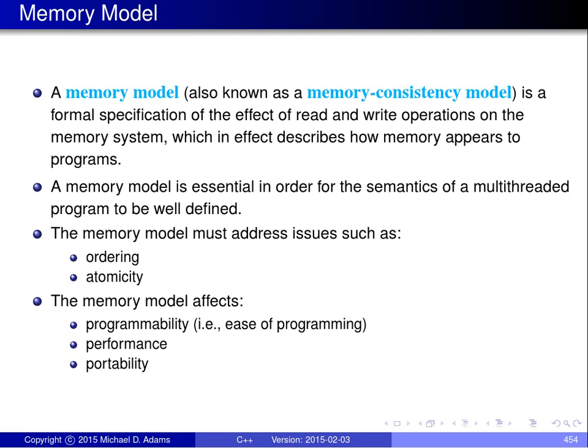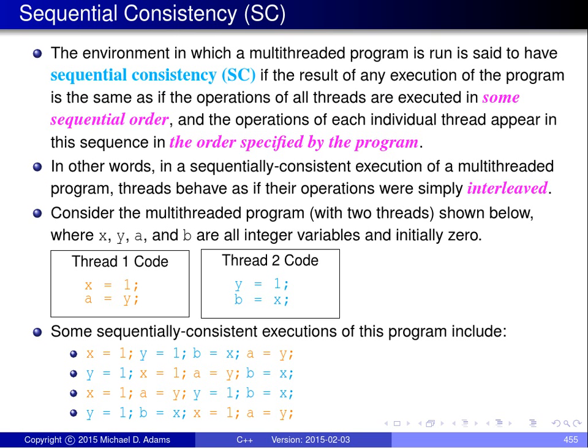The memory model affects primarily three things: programmability — how easy it is to write correct code; performance — some memory models perform much better because they're more efficient; and portability — depending on how the memory model is structured, it might not be possible to support it on certain processor architectures if you're too strict about how it must behave.